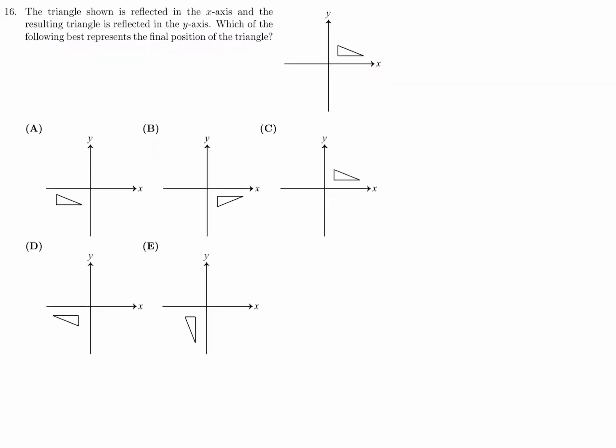The triangle shown is reflected in the X-axis. And then the resulting triangle is reflected in the Y-axis, which of the following best represents the final position of the triangle. All right. First, let's reflect it in the X-axis. And when you do, it will look something like this. So now we have to look at the answer choices and see which one looks like this. And I believe the one that matches the best is D for numbers.